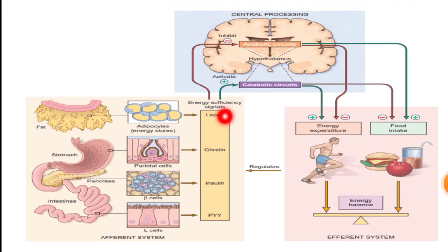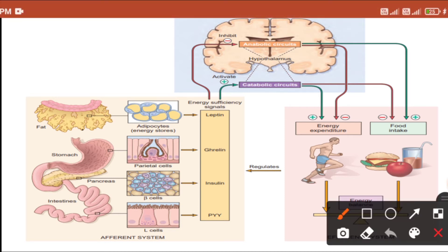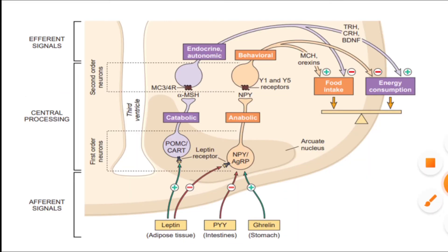Leptin is secreted from adipose tissue. Ghrelin is produced from parietal cells of the stomach. Insulin is secreted from beta cells of the pancreas. PYY is secreted from L cells of the intestine. This diagram from Robbins' book demonstrates the catabolic and anabolic pathways in detail.